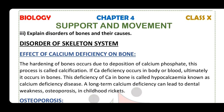The hardening of bones occurs due to deposition of calcium phosphate — a process called calcification. If calcium is deficient in the body or blood, bones are affected. This condition is called hypocalcemia (calcium deficiency disease), which leads to dental weakness, weak bones, and small teeth.